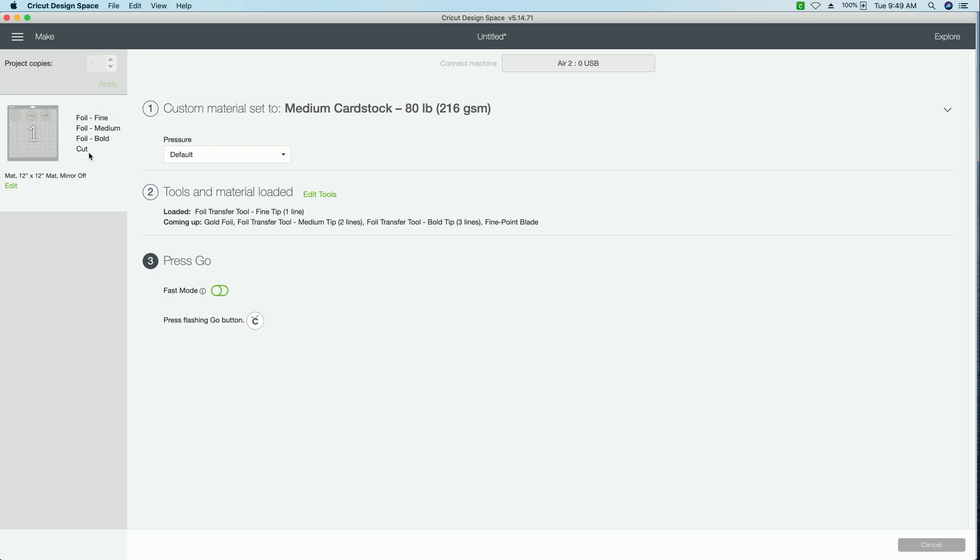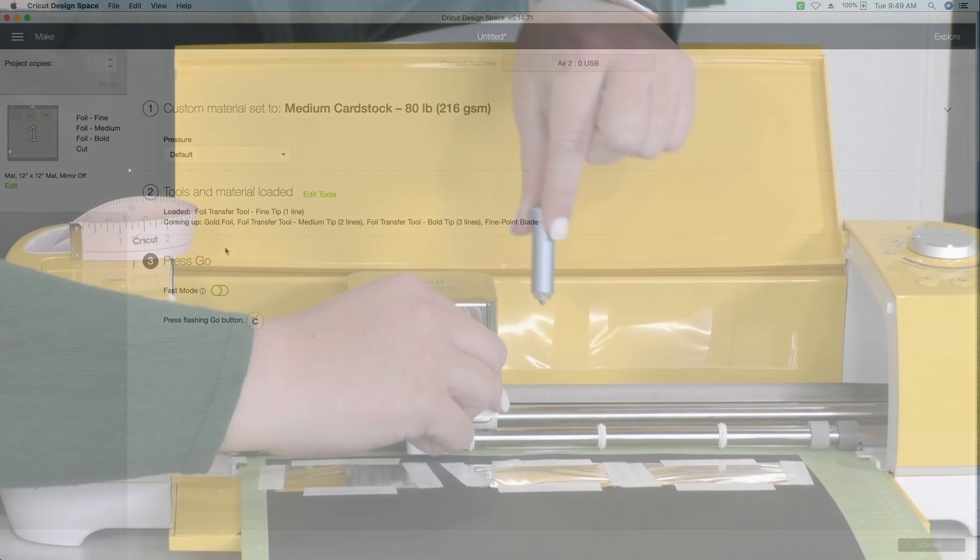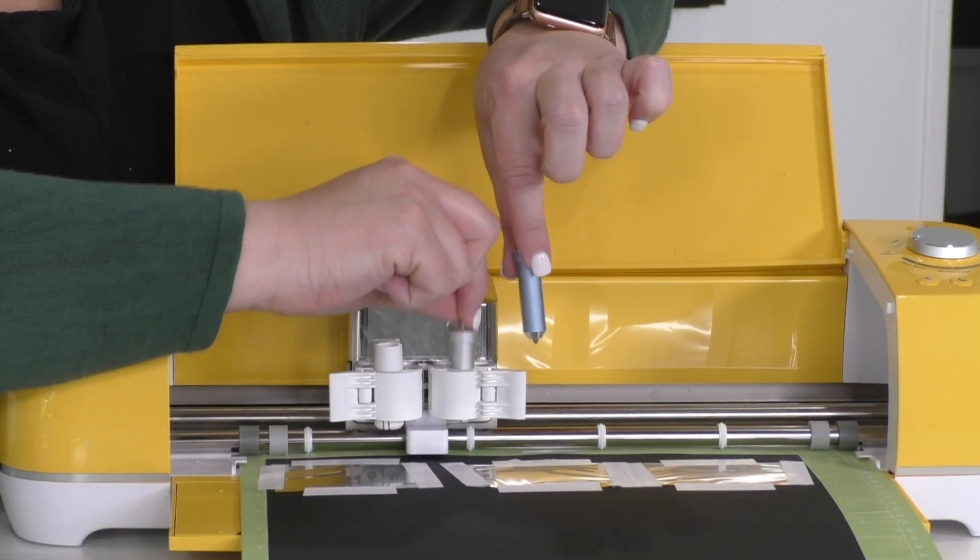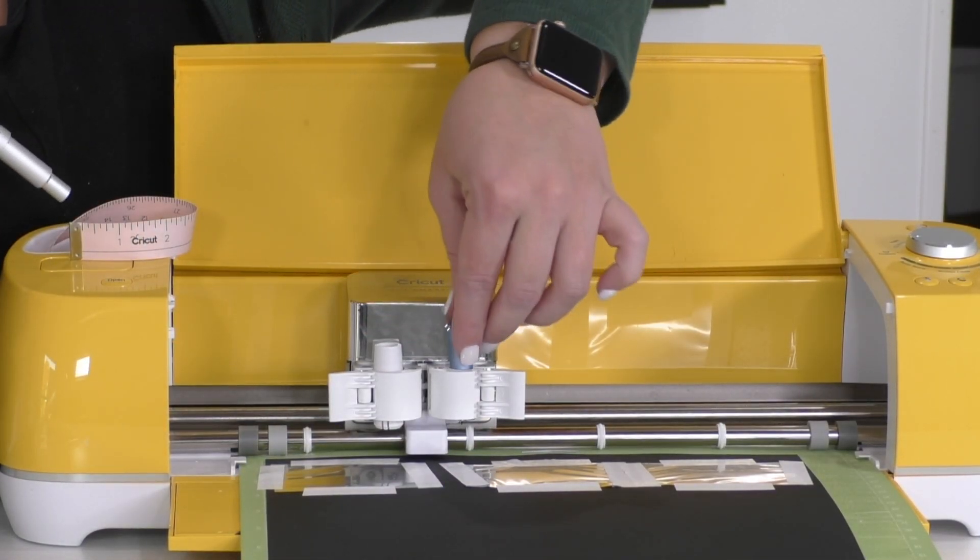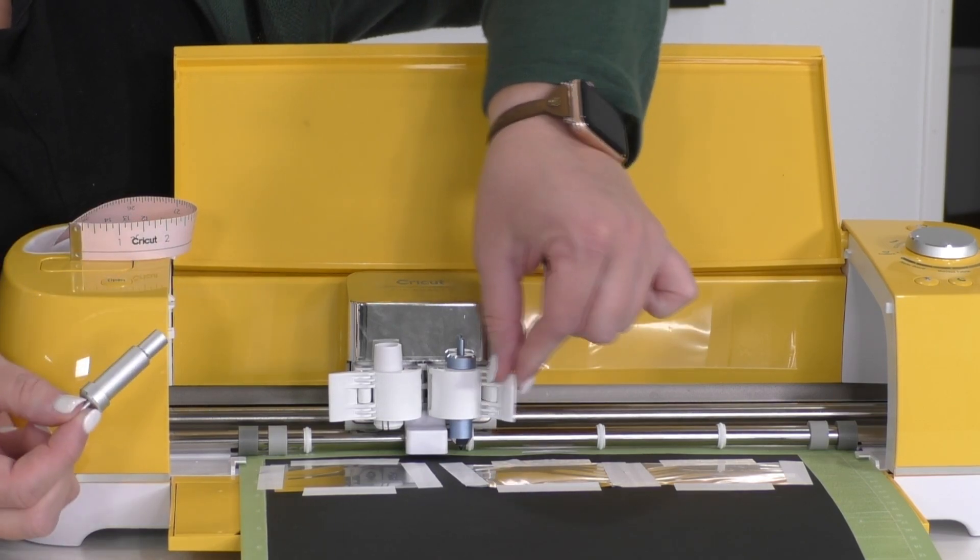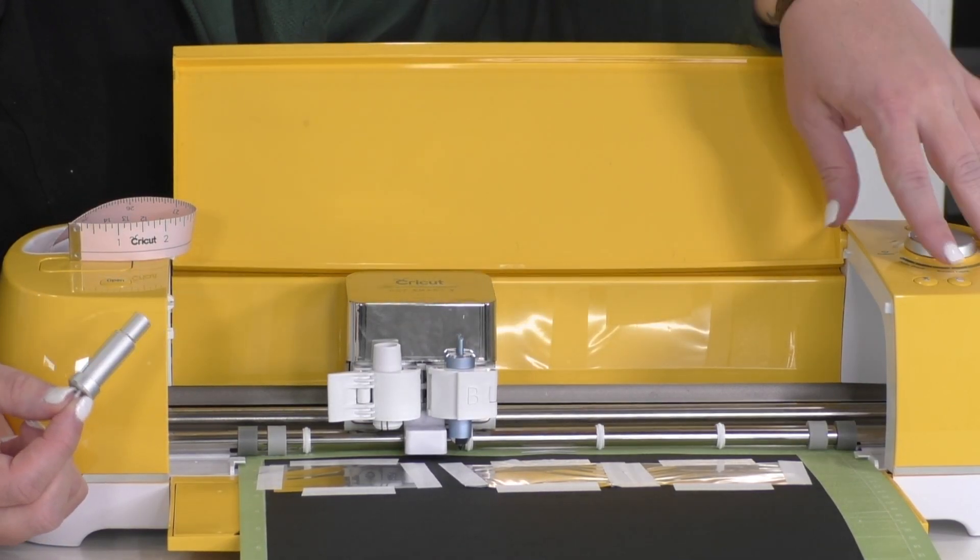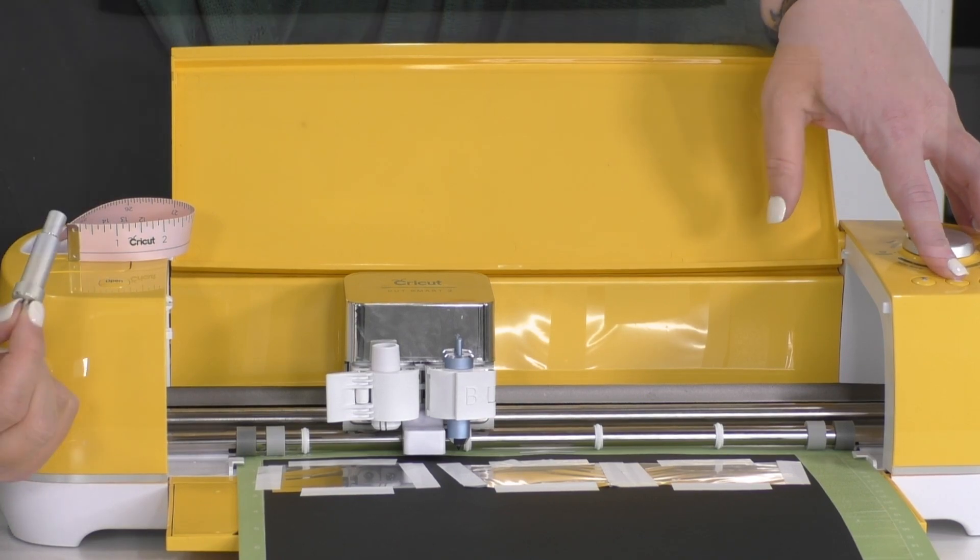And so the one that it's telling us to load first is the fine tip. So make sure that you're following these prompts, and that you're putting the correct tool in so that you're going to get the results that you are hoping to achieve. So we're going to go ahead and load the foil transfer tool in here. We're removing the fine point blade and just putting this in clamp B and then we can go ahead and press our flashing Cricut button.